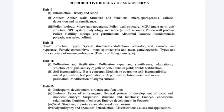Next: what is syngamy and triple fusion. Next: what is double fertilization. Next: define fertilization. Next: define porogamy, chalazogamy and mesogamy, each with one example. Next: pollen tube. Next: how pollen tube enters into embryo sac. Next: endosperm and its function.